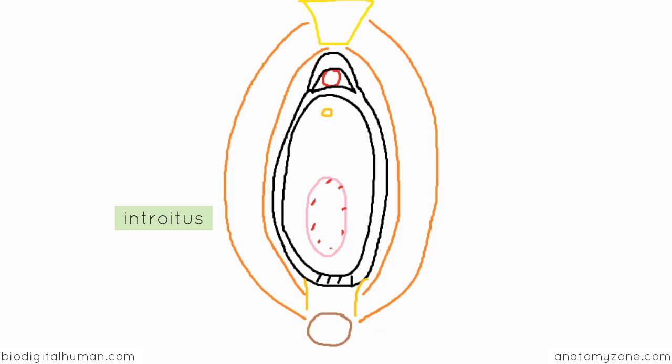So also within the vestibule, you've got the opening of two glands. On either side of the urethral orifice, you've got the opening of the paraurethral glands.